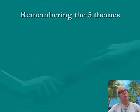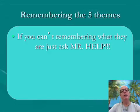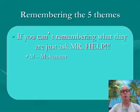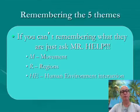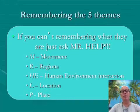In order to remember the five themes, which I'm going to ask that you do, we have a little helper. Think to yourself: Mr. Help. M is for movement, R is for regions, HE is for human-environmental interaction, L is for location, and P is for place. A nice little way to remember the five themes.